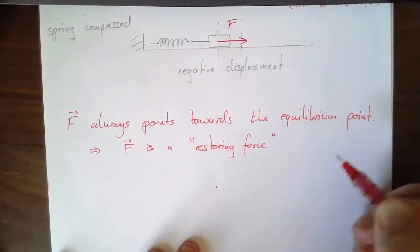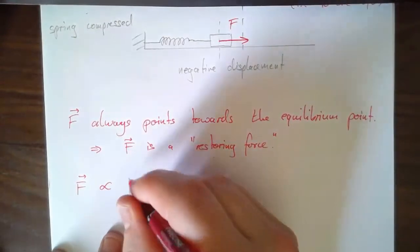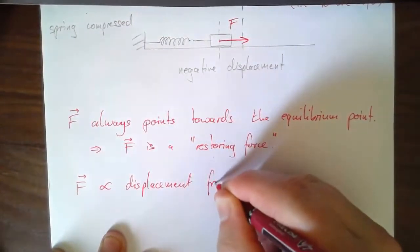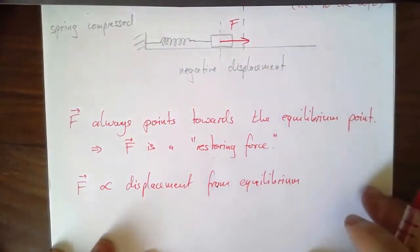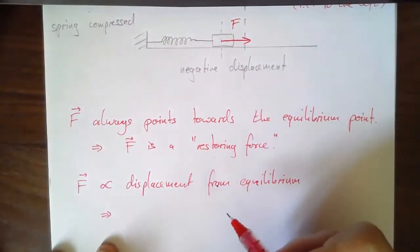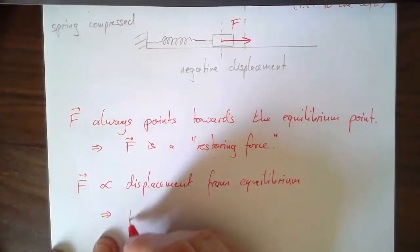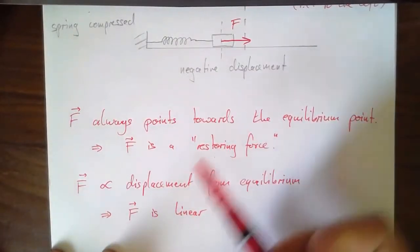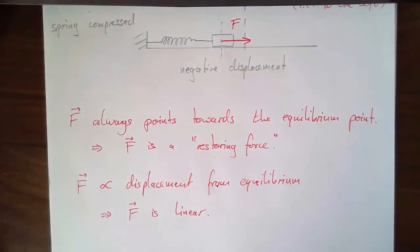So the force F is a restoring force proportional to the displacement from equilibrium — which means it is linear. We call the force due to a spring a linear restoring force, a term you'll encounter in future lectures, reading, and lab work.